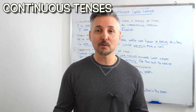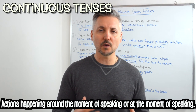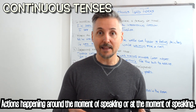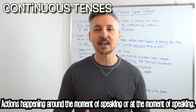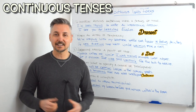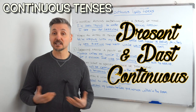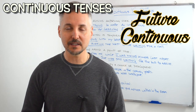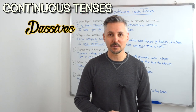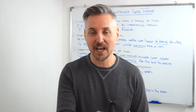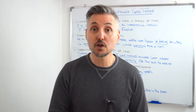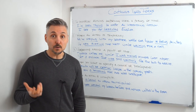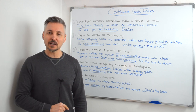So by now you know, generally speaking, that continuous tenses are those actions that are happening around the moment of speaking or at the moment of speaking. They actually emphasize the action itself. These tenses are present continuous, past continuous, present perfect continuous, past perfect continuous, future continuous, and the passive forms. I understand why you're looking so confused — don't worry. If you want to review those tenses, you may click here. In order to make the lesson simple, I've divided the usage into six groups. So let's take a look at them.